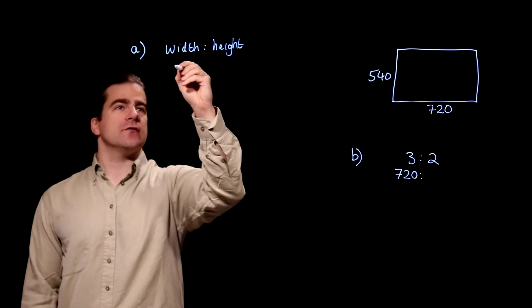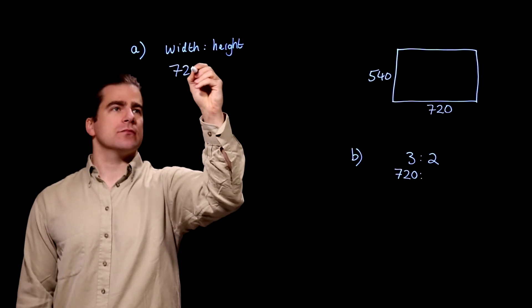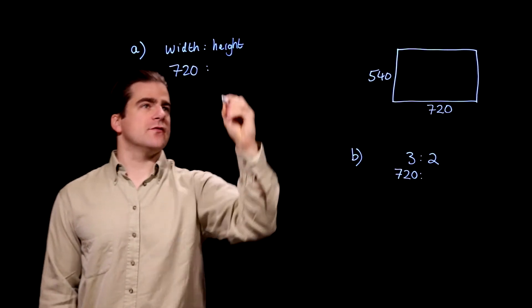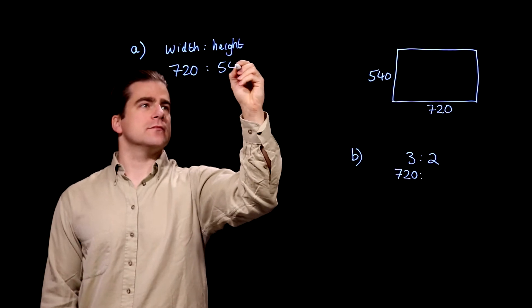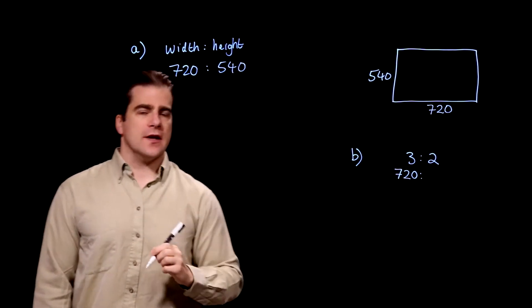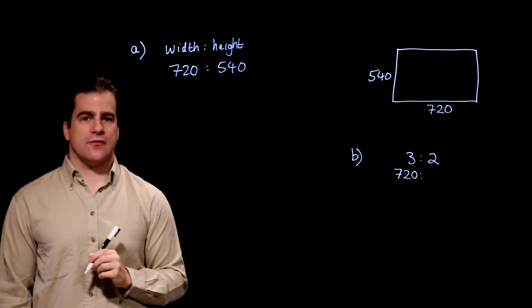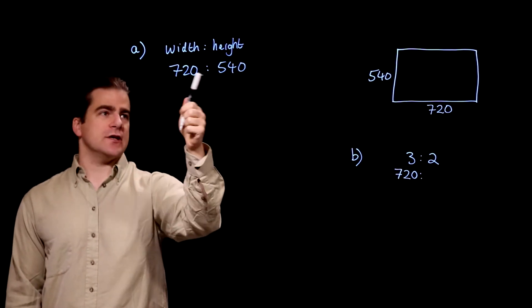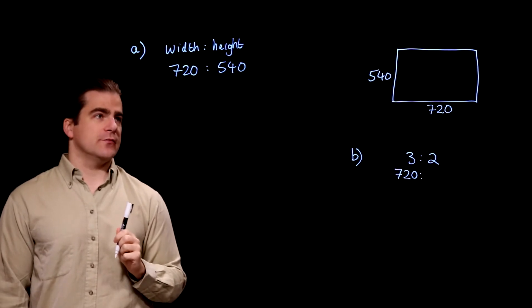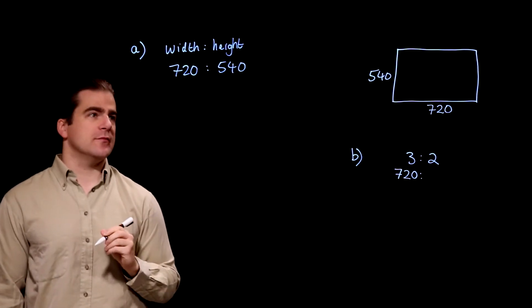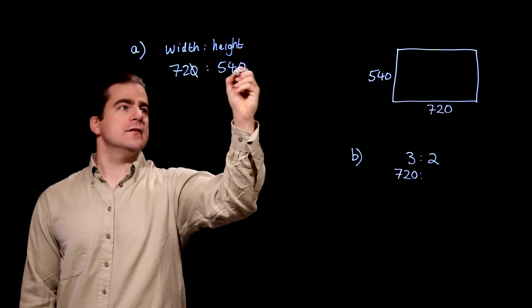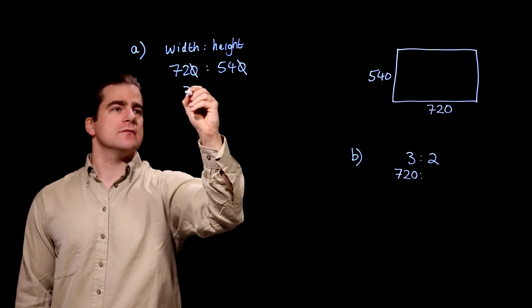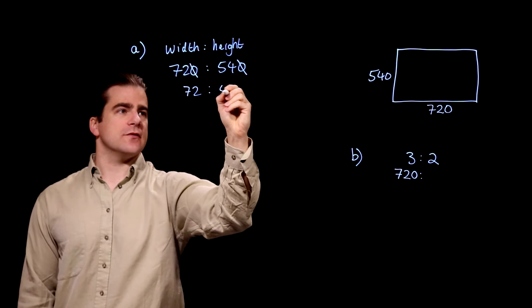The width is 720. The height is 540. It's a bit like simplifying a fraction. The fraction is a ratio of the top to the bottom. This is a ratio of that to that. I see a zero on the end of both of them, so we can divide both of them by 10. Knock off that zero. We just get 72 to 54.